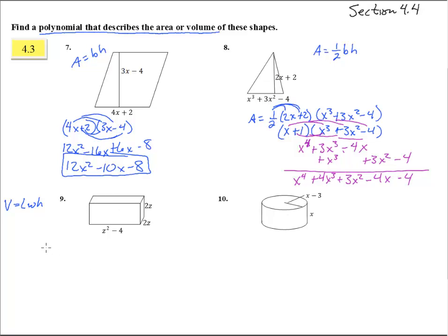So we get volume equals, we're going to have 2z times 2z times z squared minus 4. So 2z times 2z, that's 4z squared, times z squared minus 4. And this one's not so bad. All we have to do here is jump that guy in, that becomes 4z to the fourth minus 16z squared. There's our volume.